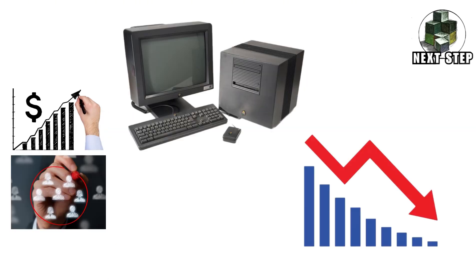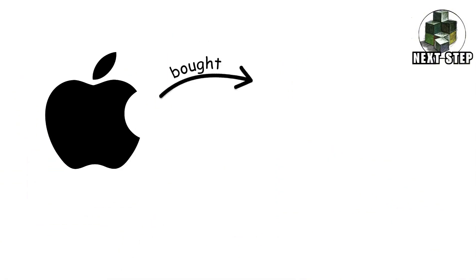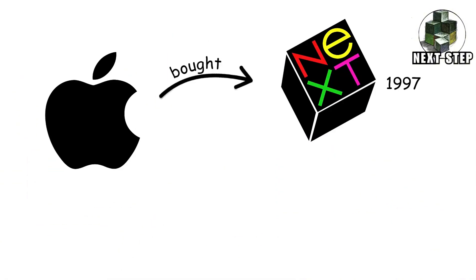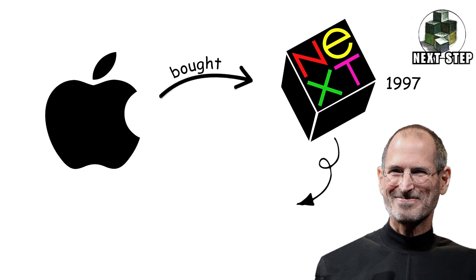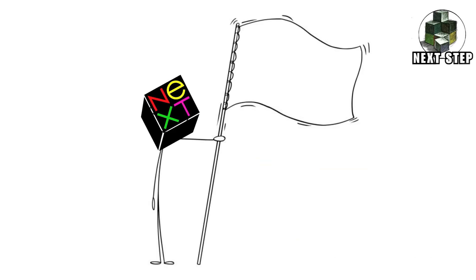NeXT Computers didn't sell well and most people never touched NeXTSTEP in their life. But here's where it gets insane: Apple bought NeXT in 1997, Steve Jobs came back, and NeXTSTEP evolved into Mac OS X and eventually modern macOS and iOS. So technically, if you own an iPhone or Mac today, you're using a descendant of a failed operating system. NeXTSTEP didn't win the battle — it became the entire future. That's the quietest revenge story in tech history.